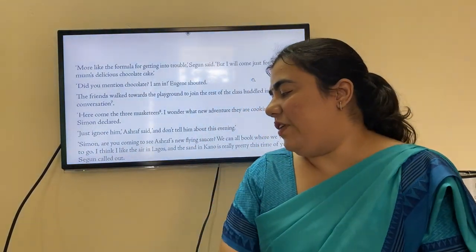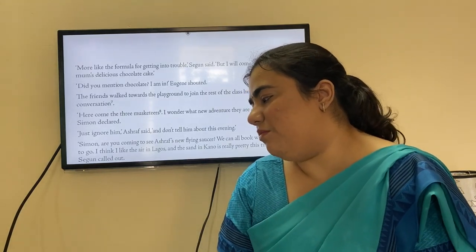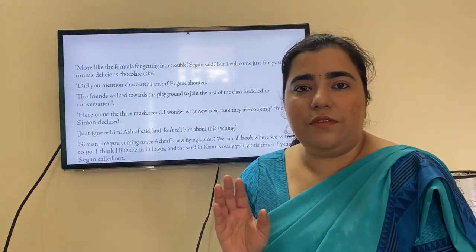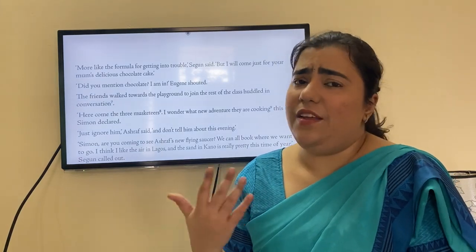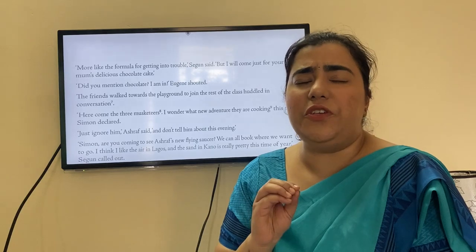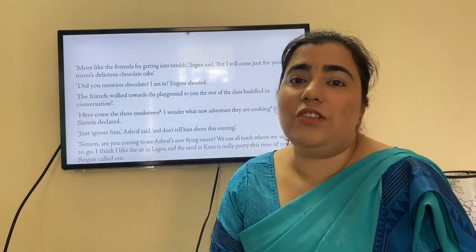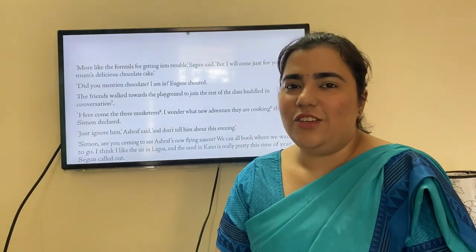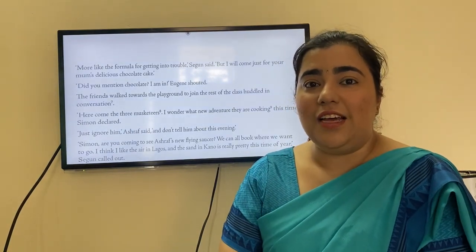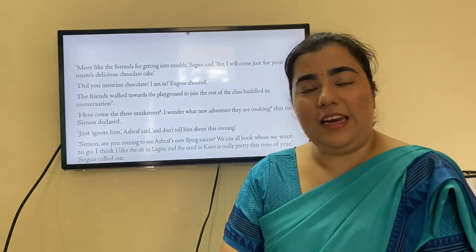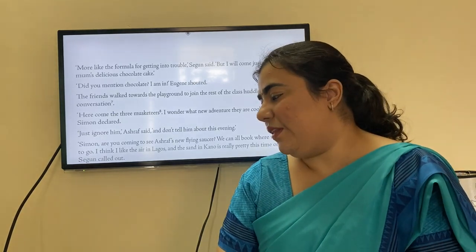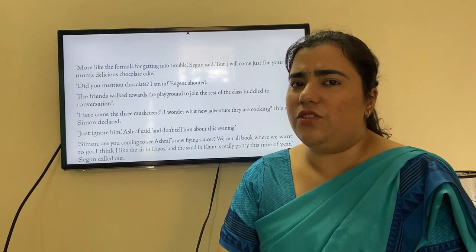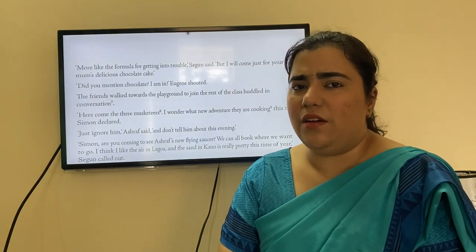'More like the formula for getting into trouble,' Segan said, 'but I will come just for your mom's delicious cake.' 'Did you mention chocolate? I'm in!' Eugene shouted. So Segan agrees to come despite expecting another disaster, motivated by the chocolate cake, and Eugene also agrees. The friends then walked towards the playground to join the rest of the class.